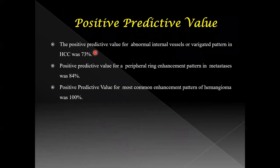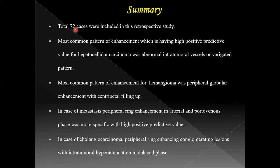The positive predictive value for abnormal internal vessels or heterogeneous enhancement in HCC was 73%. For peripheral ring enhancement in metastasis it was 84%, and for the most common enhancement pattern of hemangioma it was 100%. In summary, 72 cases were included. For HCC, the high PPV pattern was abnormal intratumoral vessels or variegated/heterogeneous enhancement. For hemangioma, peripheral globular enhancement with centripetal filling. For metastasis, peripheral ring enhancement in arterial and portal phases had high PPV.